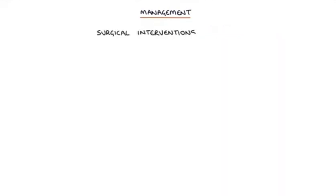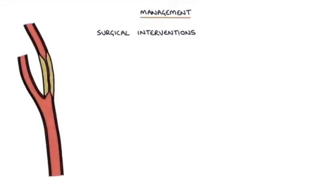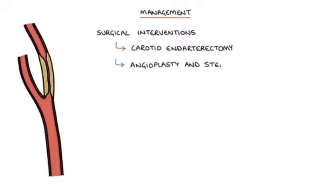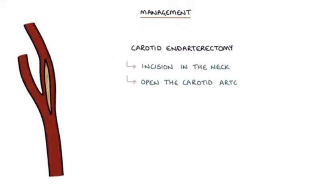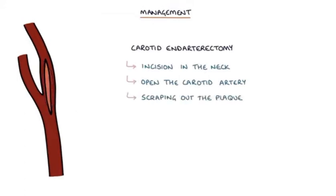Surgical interventions are considered where there is more significant stenosis, and the options are carotid endarterectomy or angioplasty and stenting. Endarterectomy involves an incision in the neck, opening the carotid artery and scraping out the plaque. This is the first-line treatment for most patients who require surgical intervention.